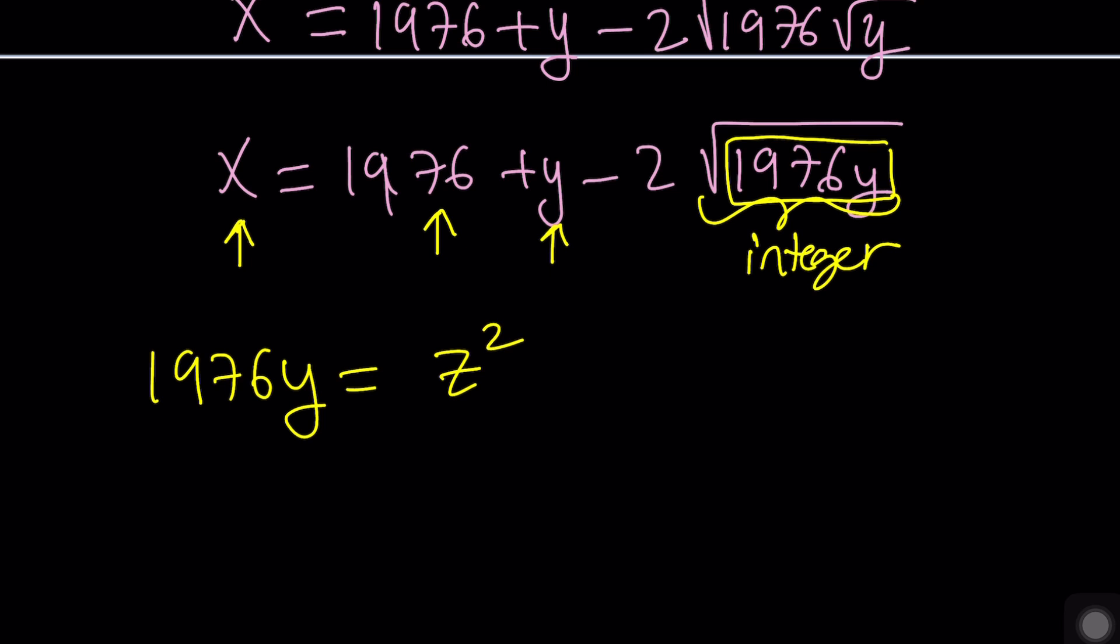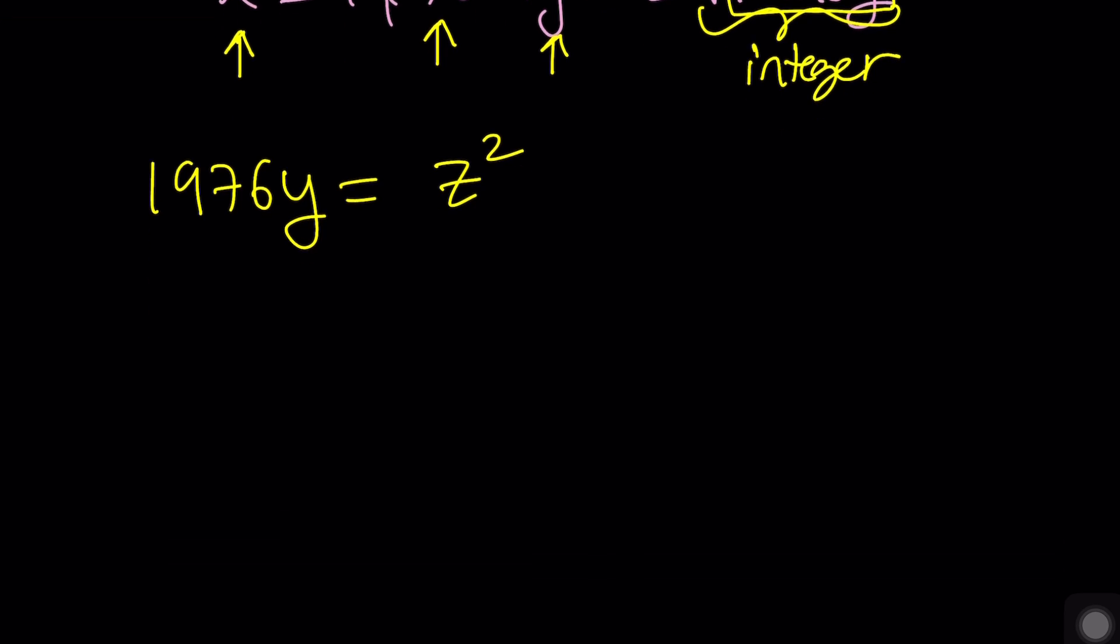The critical part here is identifying the radical as being an integer and then turning it into a perfect square, and the next step would be to look at the prime factors. So we're going to go ahead and do the prime factorization on 1976.